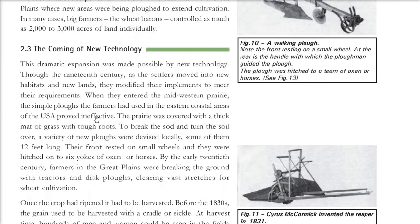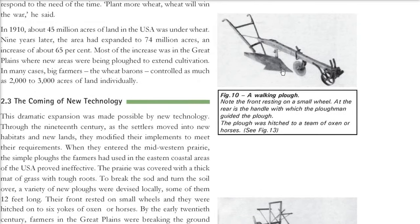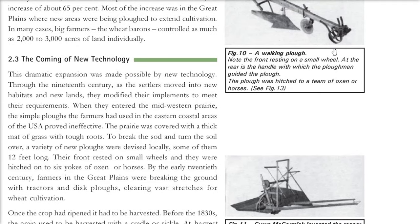This was the age of new technology. Previously, everything was done by hand, but those lands had very tough grass roots. In order to break this sod and turn the soil over for plowing, new plows were devised locally. Some were 12 feet long, with their front resting on a small wheel, hitched to six yokes of oxen or six horses.